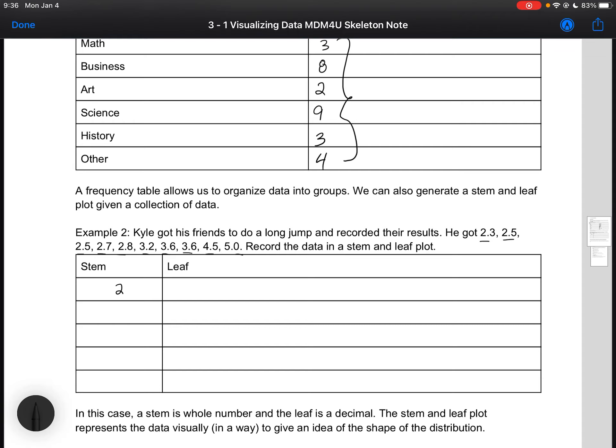The stems are going to be the whole numbers in this case, so I've got 2, 3, 4, and 5. We don't need this last column here. My leaves are going to be the decimal, so for every stem of 2 I've got 3, 5, 7, and 8. For my 3s I've got 2 and 6.